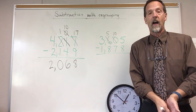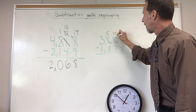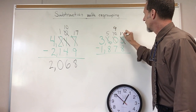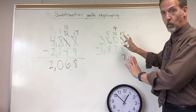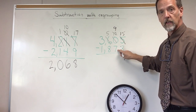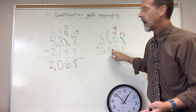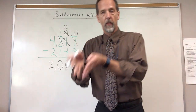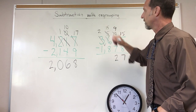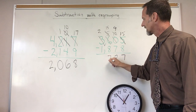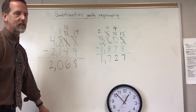Two places. I'm going back to the ones place. Can I do 5 minus 8 yet? Nope. Can I go to the tens place and borrow now? Yes, now I can. Smaller — 10 becomes 9. Larger — 5 becomes 15. Now I can subtract: 15 minus 8 is 7. Tens place: 9 minus 7 is 2. Hundreds place: 5 minus 8 — I cannot. I've got to get more hundreds from the thousands. Two places — smaller, larger — 5 becomes 15. 15 minus 8 is 7. 2 minus 1 is 1. I am done: 1,727.